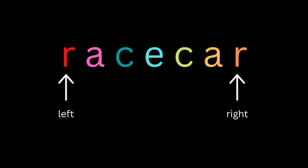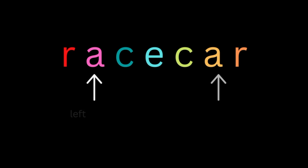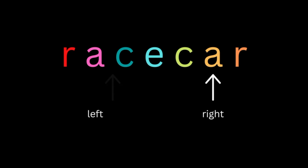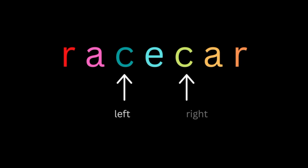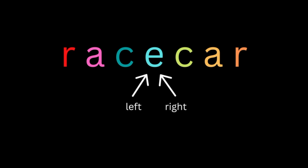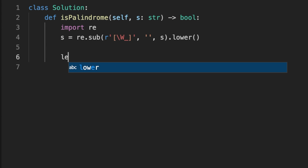To solve this problem we're going to create a left and right pointer. The left pointer will initially start at the first letter of the input string and the right pointer will start at the end of the input string. We're going to compare the letters — if they match, we move the left pointer to the next letter and the right pointer to the previous letter. If they all match, it is a palindrome.